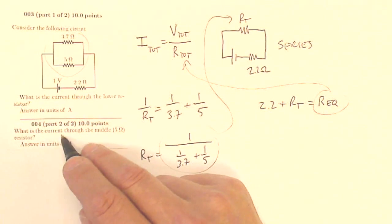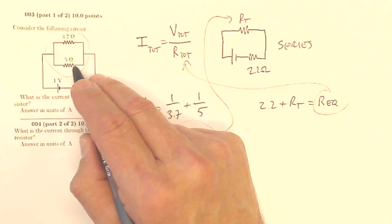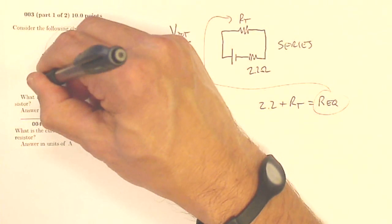For question number 4, it says, what is the current through the middle resistor? This resistor here. Well...